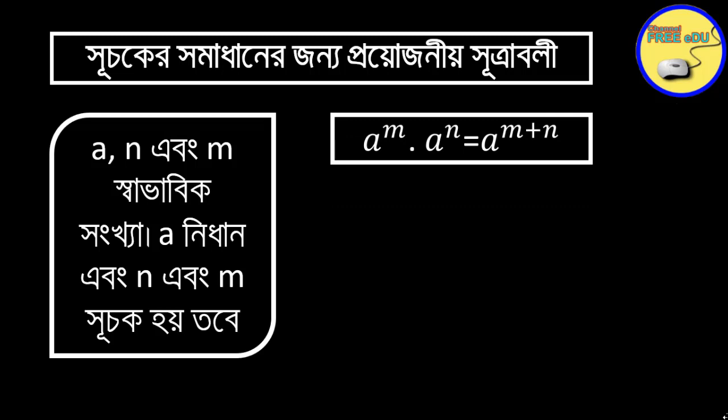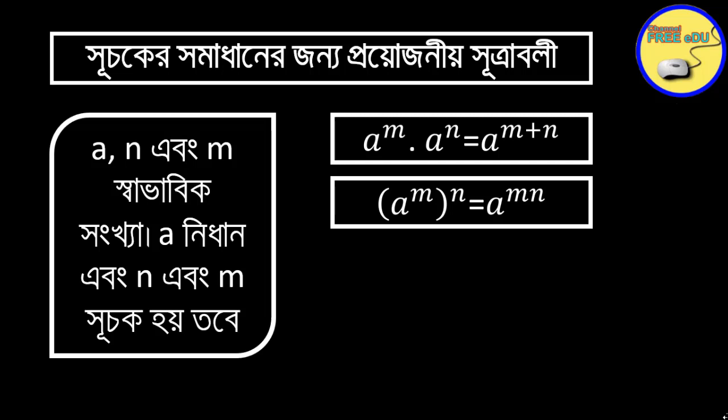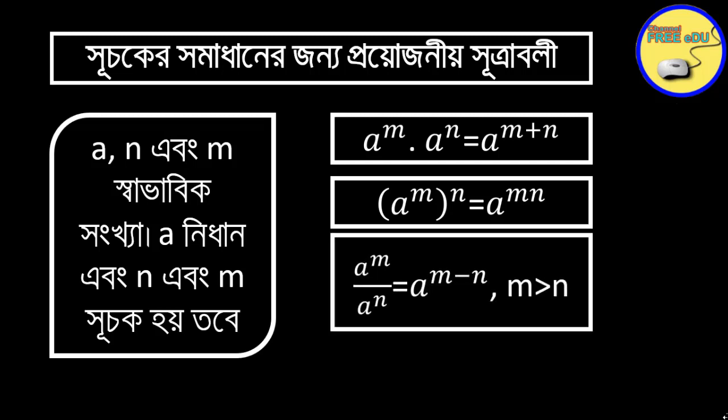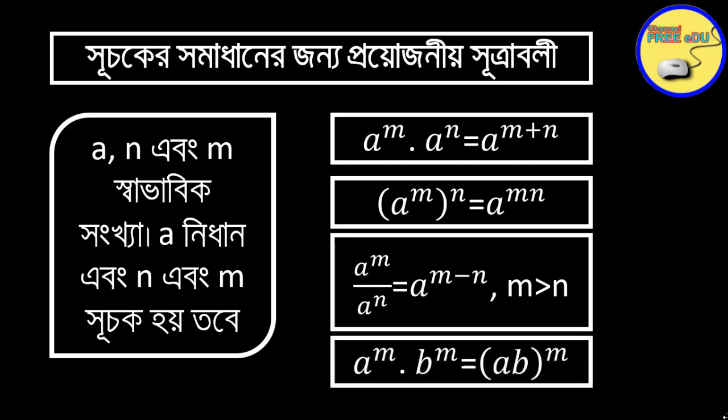a to the power m times a to the power n equals a to the power m plus n. a to the power m whole to the power n equals a to the power mn. a to the power m divided by a to the power n equals a to the power m minus n, where m is greater than n. And a to the power m times b to the power m equals ab whole to the power m.